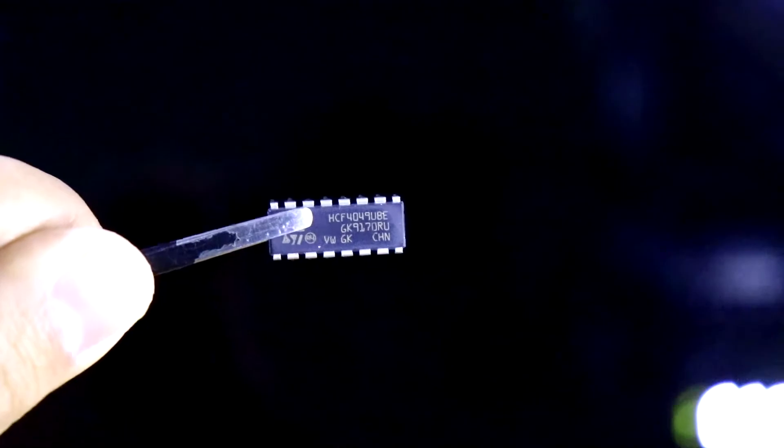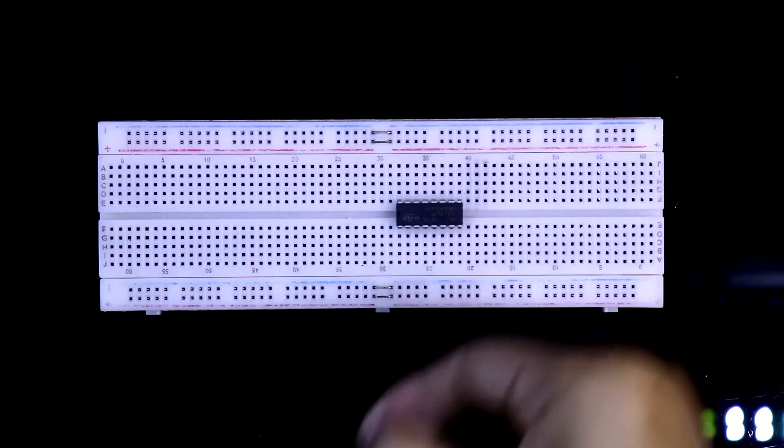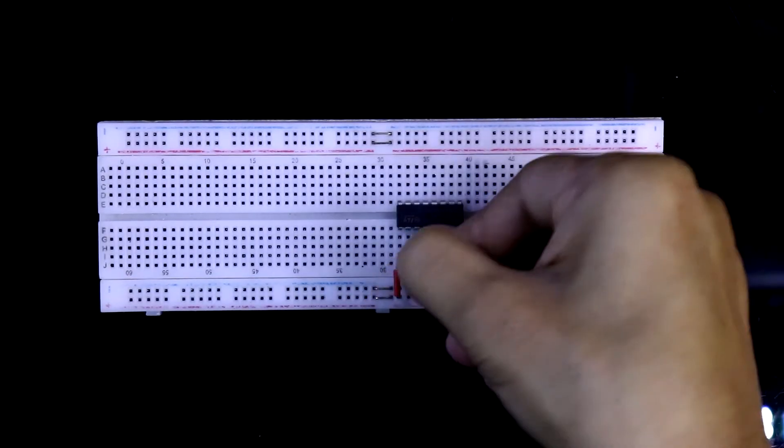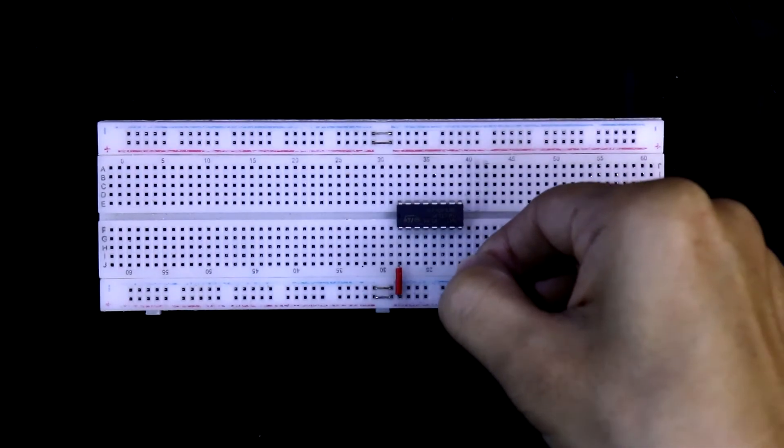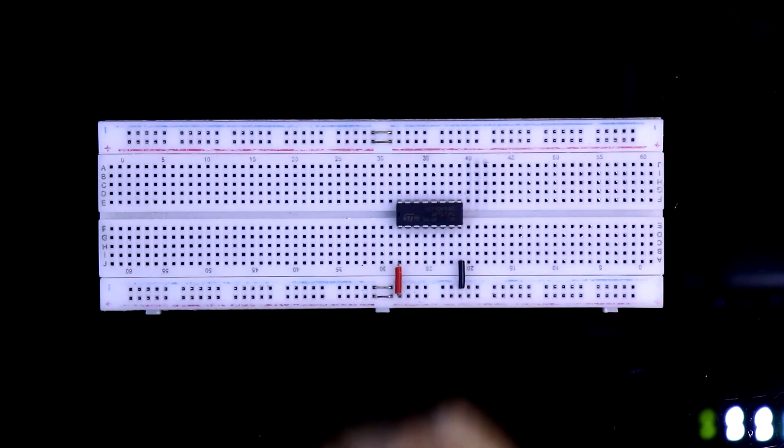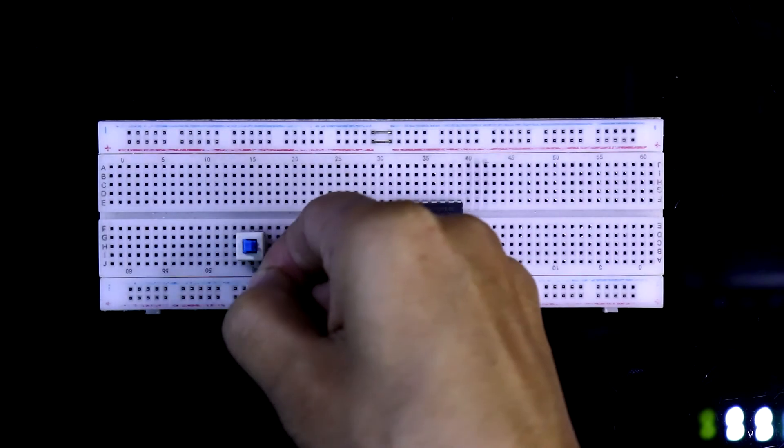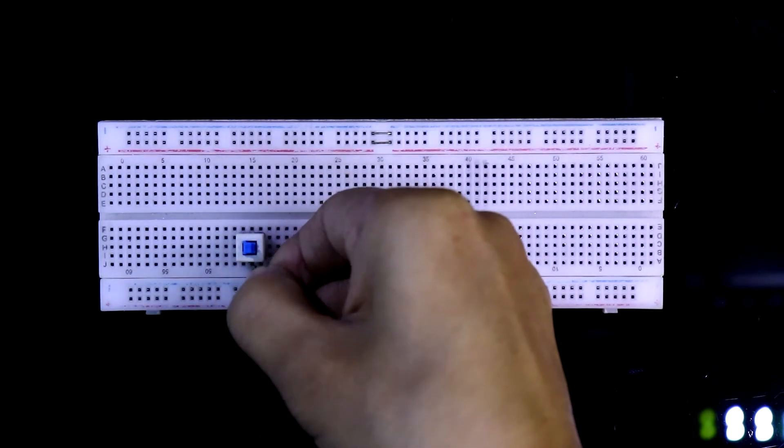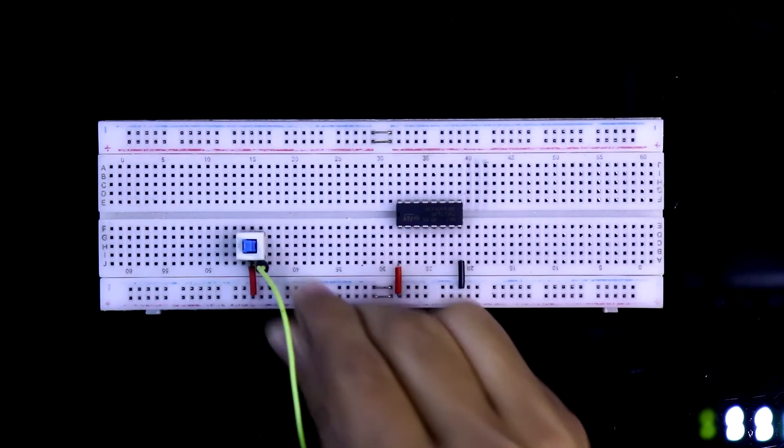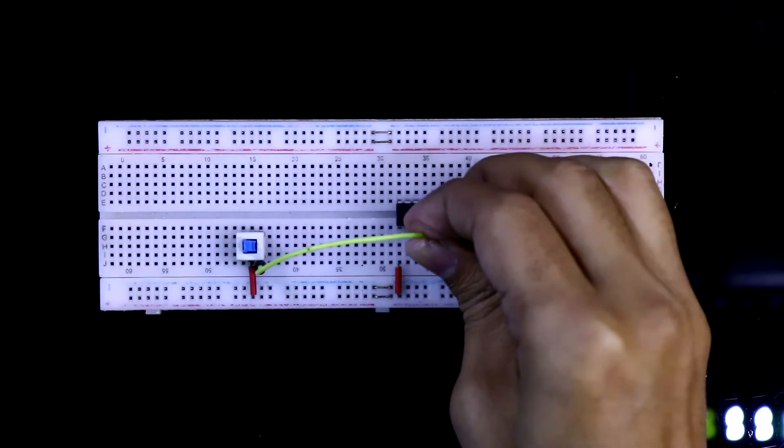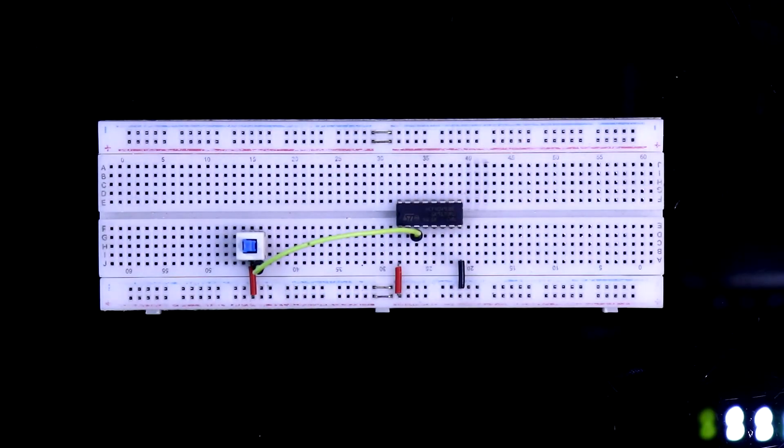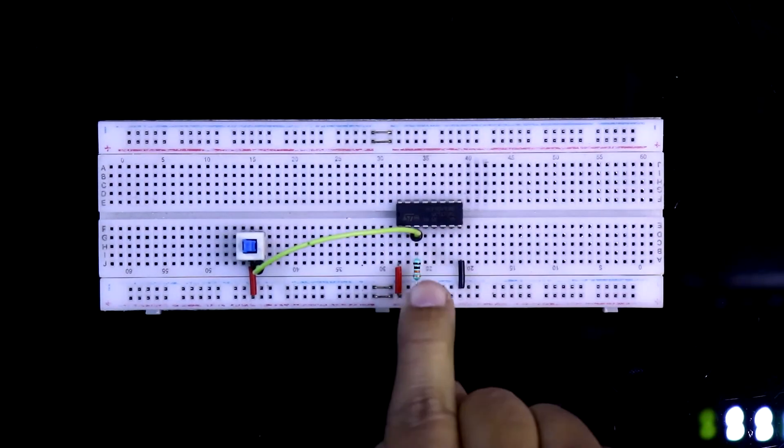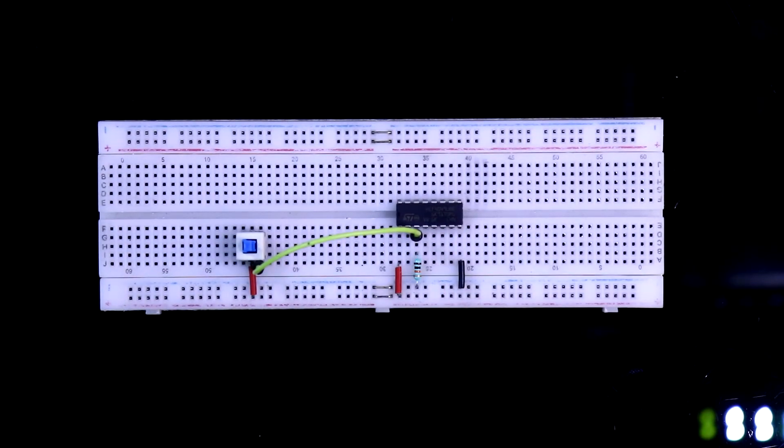This one is IC 4049. Pin number 1 is connected to the plus VCC. Pin number 8 is connected to the ground. Here is our input switch. One pin of the switch is connected to the plus VCC. And the other pin of the switch is connected to pin number 3, as pin number 3 is the input. And with the input, we have to connect pull-down resistor. Here it is 10 kilo ohms resistor.